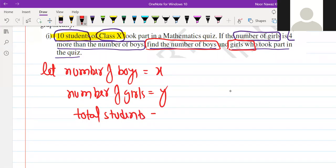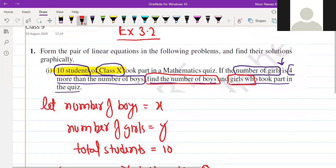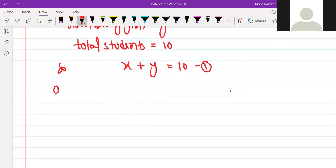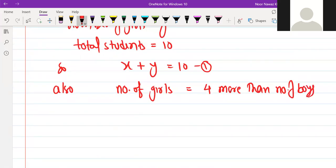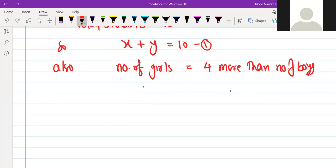Total students are 10, so simply girls and boys equals 10, yes or no? Now, if the number of girls is four more than number of boys, number of girls is equals to four more than number of boys. Change into symbols. You considered number of girls as y. What is four more? Four plus. Number of boys is x.